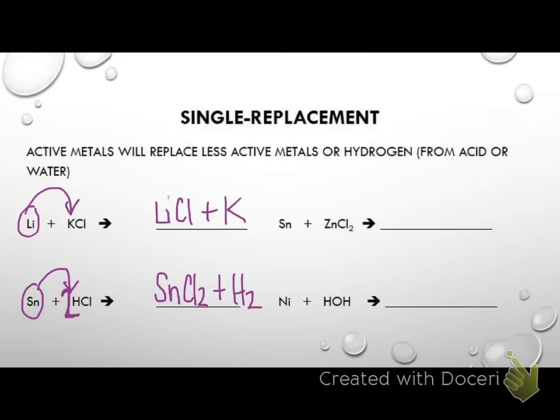Tin is one of those things that can form a plus 2 or a plus 4, so if you showed it as Sn⁴⁺ and wrote SnCl₄, I would consider that to be correct as well. Now let's look at the next one — will tin replace zinc? I look at the list and I see that no, it will not, because tin is below zinc. So we would say that this is a no reaction; it would not happen.